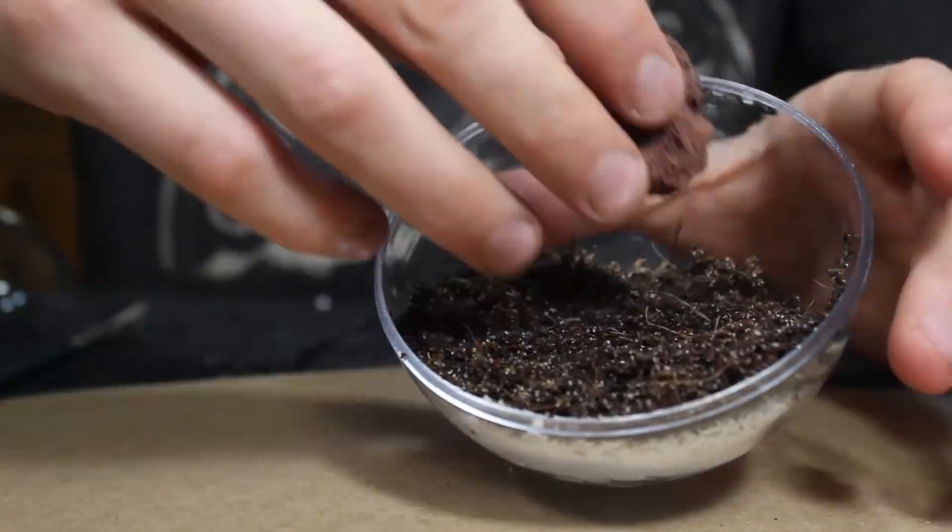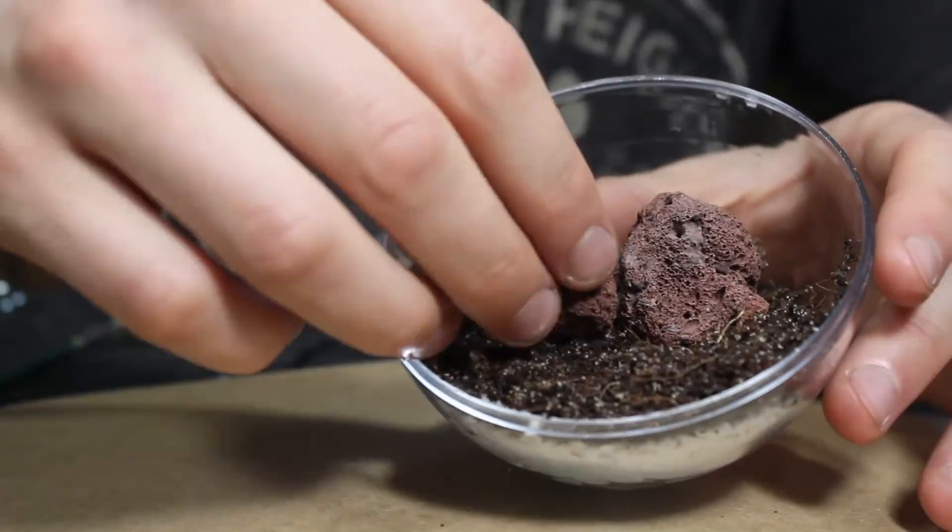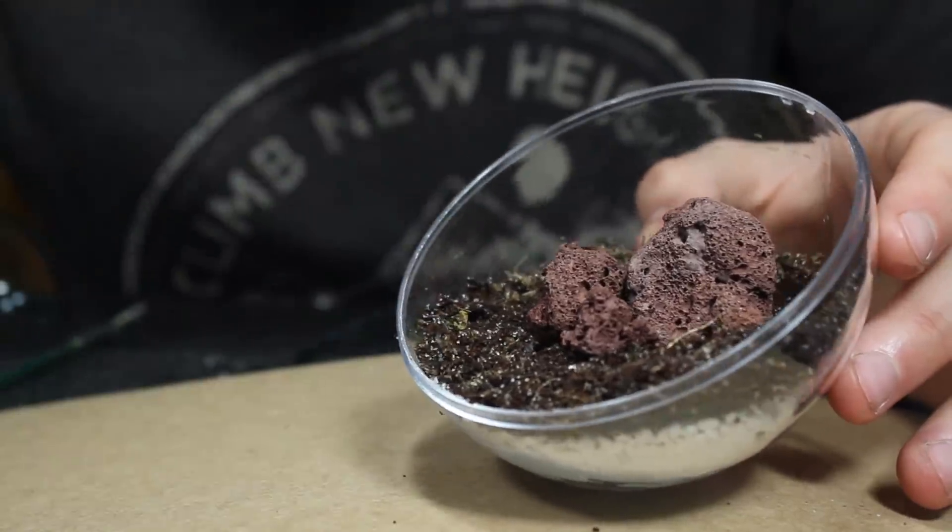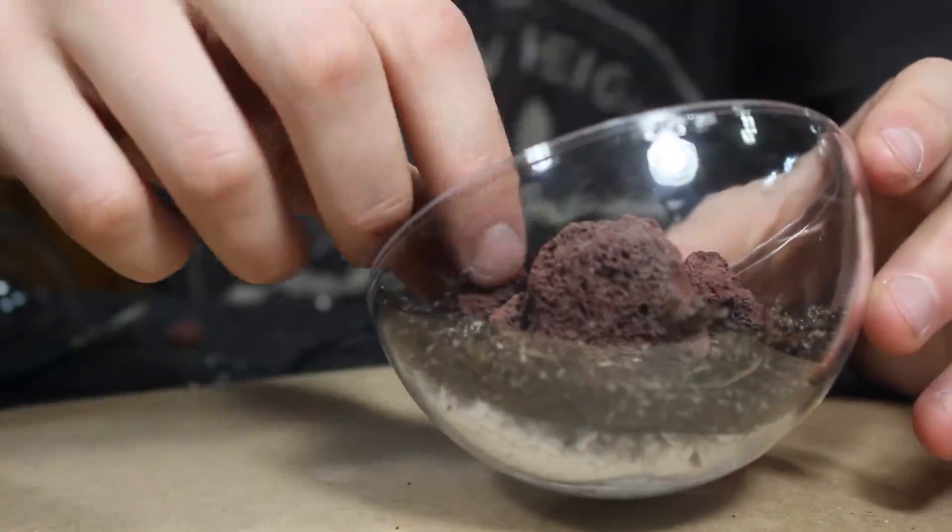From there I hardscaped the terrarium using some lava rock. I don't really care for the look of lava rock, but it's very appropriate for this terrarium because it's lightweight. In the end I thought that it looked pretty decent.